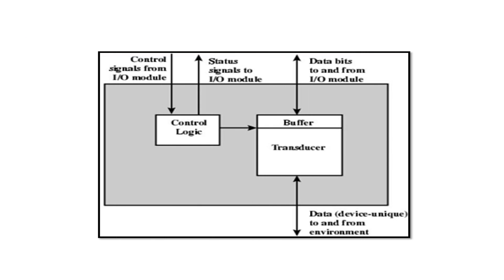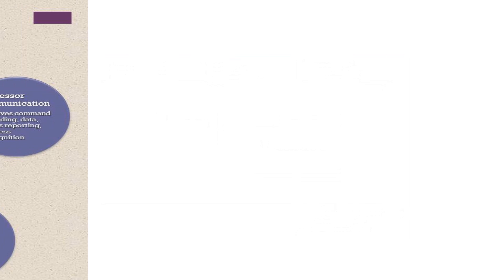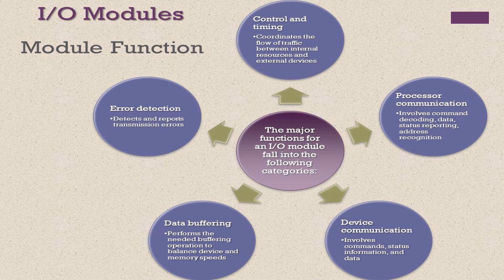Five: transducer. It converts data from electrical to other forms of energy. Six: buffer. It is used to temporarily hold the data being transferred. Let us now discuss the functions of input-output models. Some of the major functions of input-output models are as follows. Control and timing: this function is used to provide coordination of traffic between the peripherals and the internal resources.